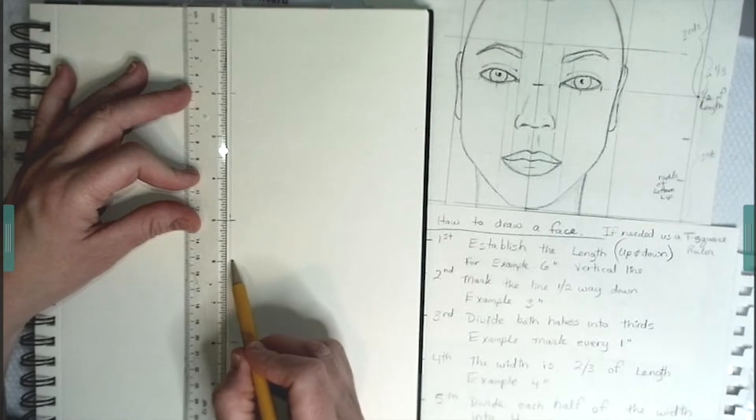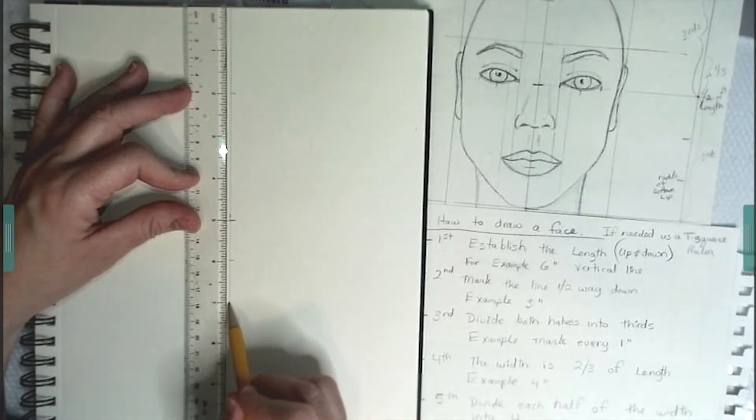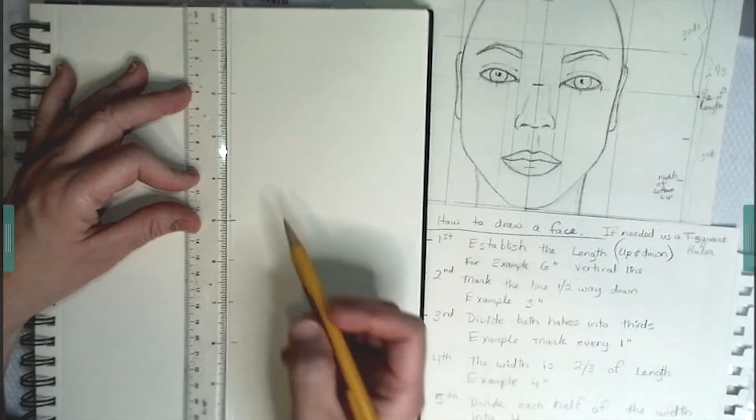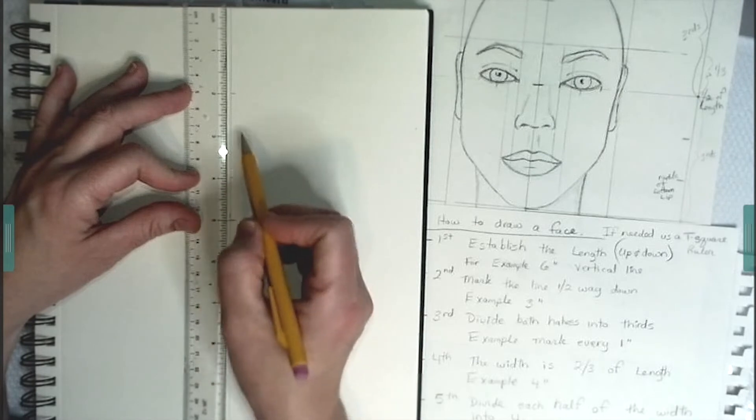So that means they would be one inch each. Mark those off also, both on the top and the bottom half.